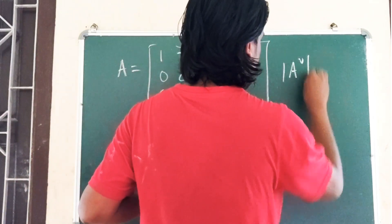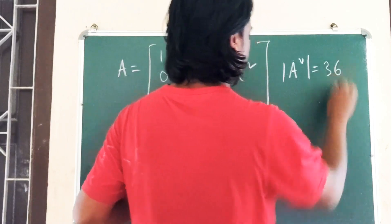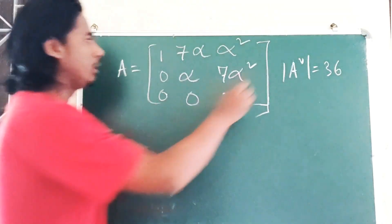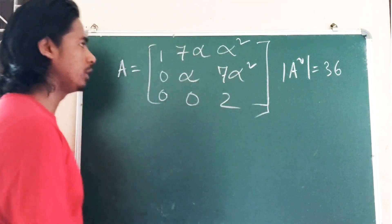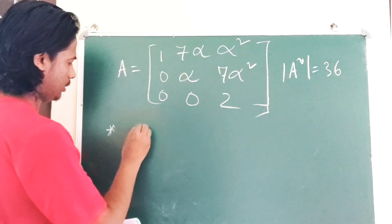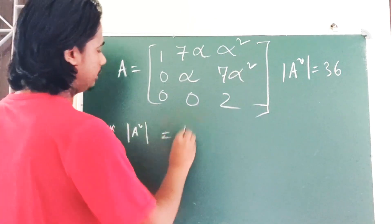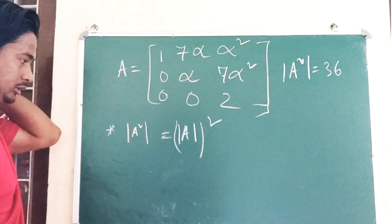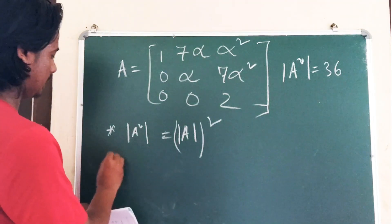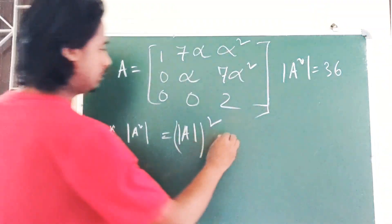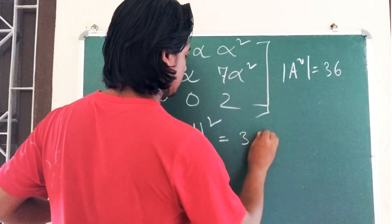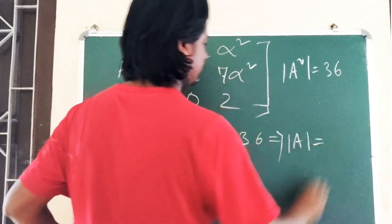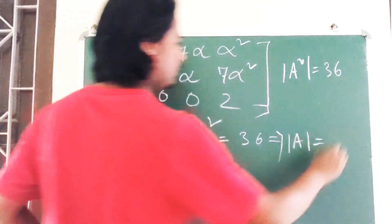For an upper triangular matrix, the determinant is simply the product of all diagonal elements. So the determinant of A equals 1 times α times 2, which equals 2α.